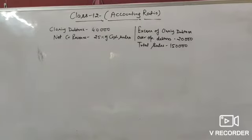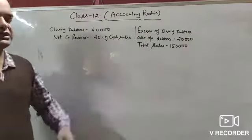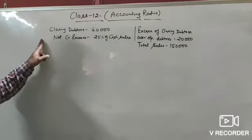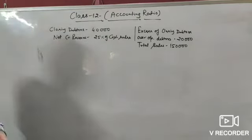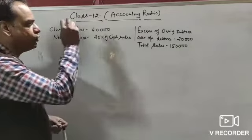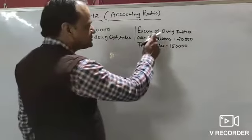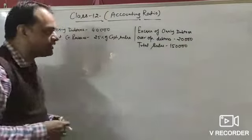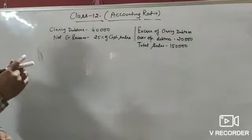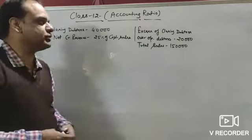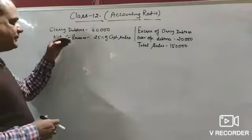Now illustration number 82. In this illustration, closing debtors ₹40,000, credit revenue from operation is 25% of cash sale, and total sales are ₹1,50,000. The closing debtors figure is ₹20,000 (excess of closing over opening implied).